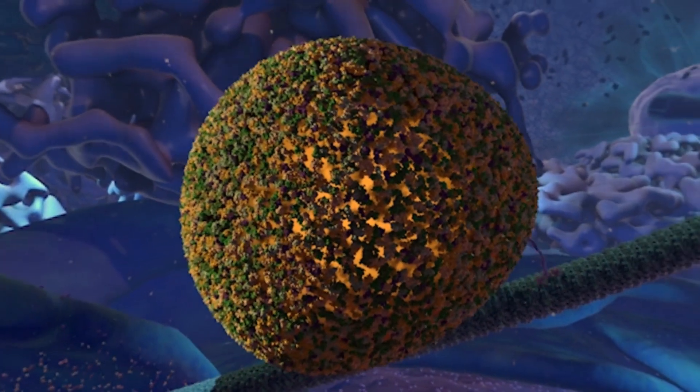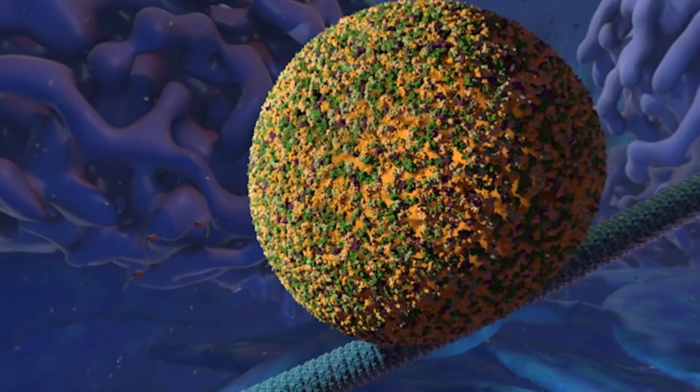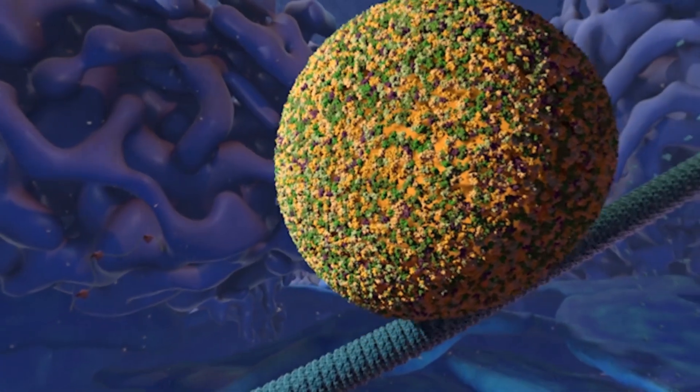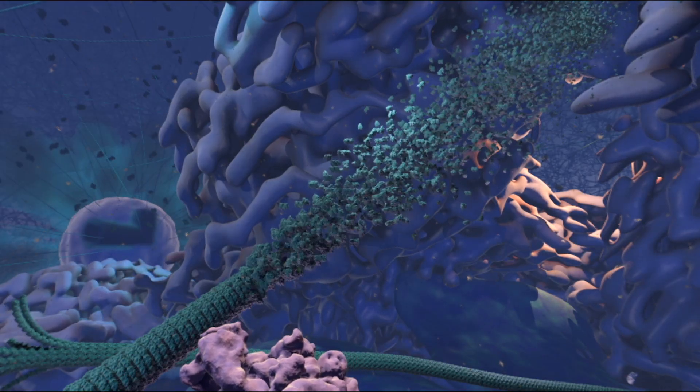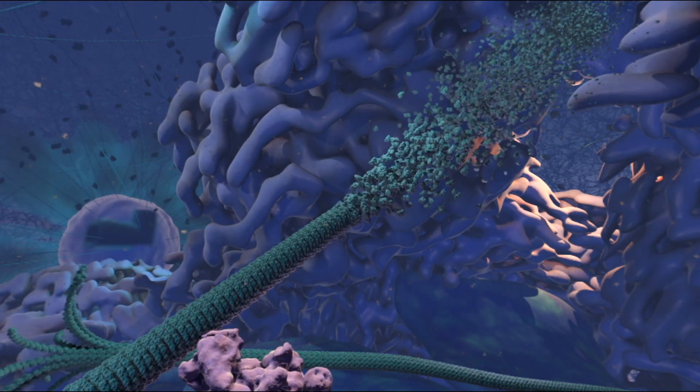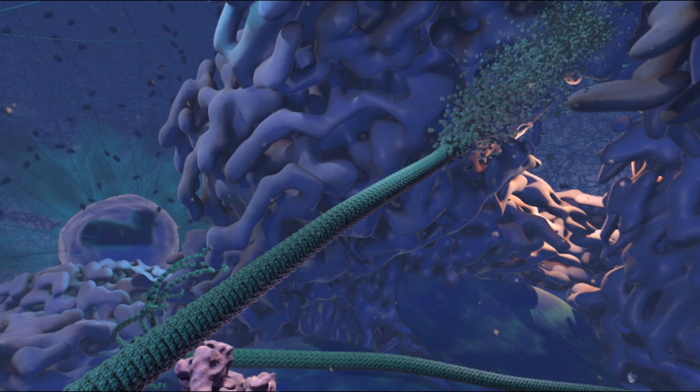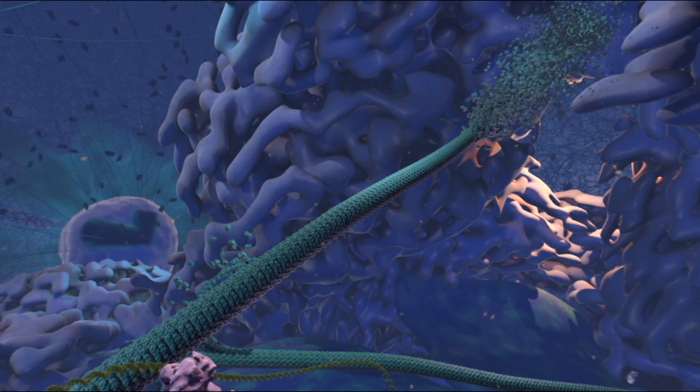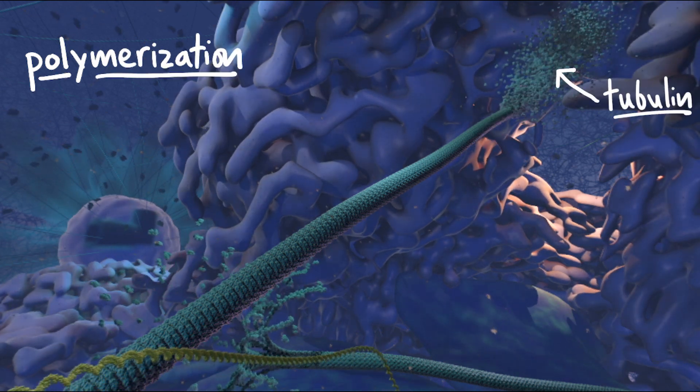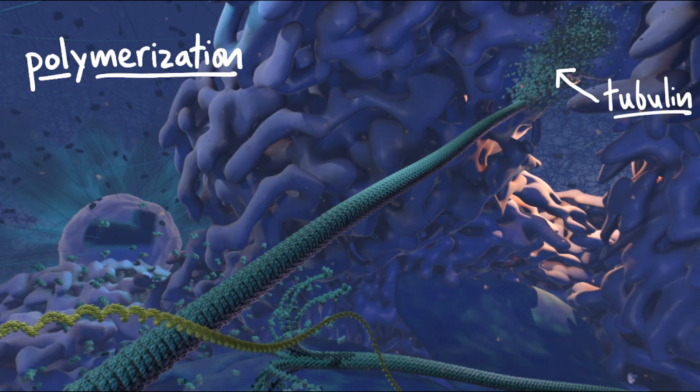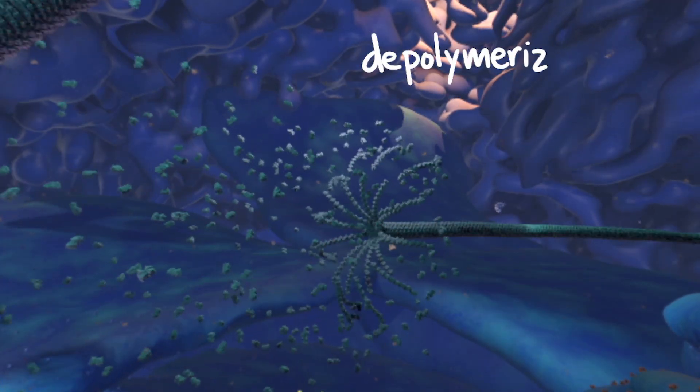But the interesting thing about microtubules is that they're not permanent. They can get taken apart and put together in different locations depending on what the cell needs. Here, the microtubule is being built or assembled from smaller parts that come together. Watch how they're added to the end. This is a process called polymerization. The small things they're made up of are proteins called tubulin. Here's a microtubule that's coming apart or depolymerizing.